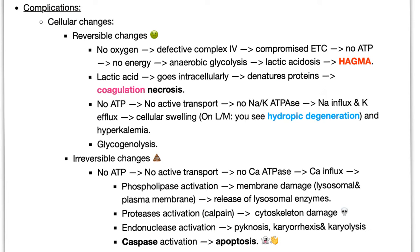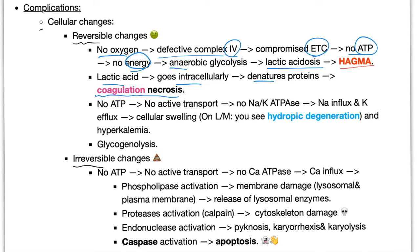Complications of hypoxia involve cellular changes — some reversible, some irreversible. No oxygen means defective complex four, no electron transport chain, no ATP, no energy, anaerobic glycolysis, lactic acidosis and HAGMA. Lactic acid will go into the cell intracellularly to denature proteins — this is coagulative necrosis, by far the most common form of necrosis, and it happens due to ischemia or hypoxia. For example, if a patient dies from a myocardial infarction, pathologically the cause is coagulative necrosis.